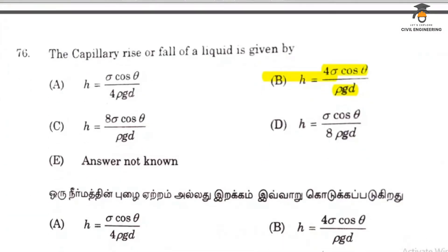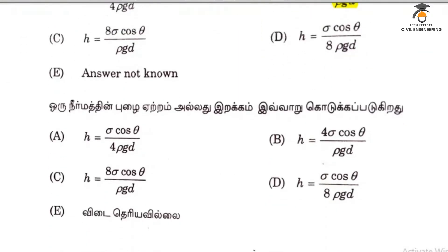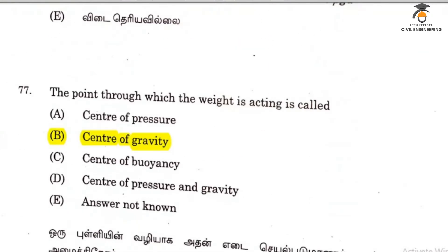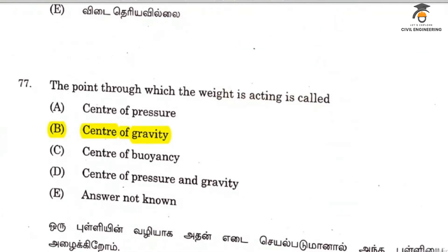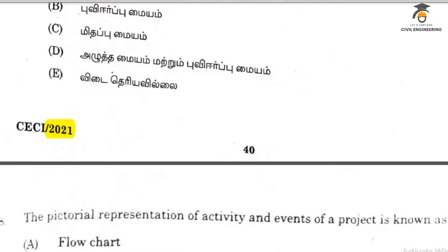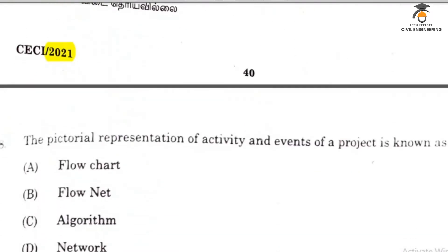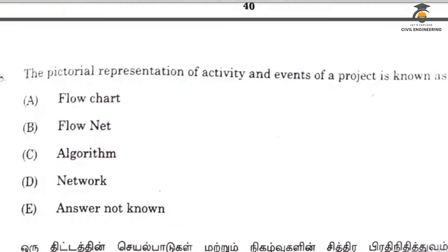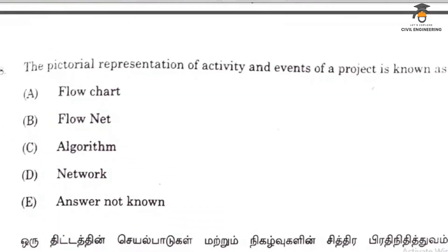Option 76 answer is the capillary rise formula, option B. The point through which the weight is acting is called the center of gravity. The pictorial representation of activities and events in a project is known as a network.